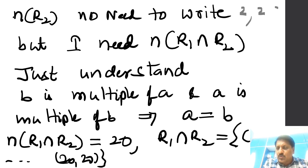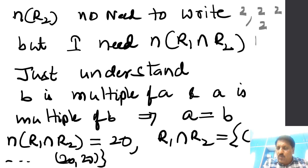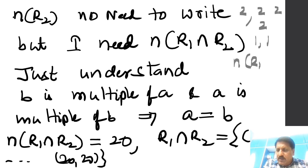Multiples of 9: 2 elements. Multiples of 10: 2 elements. After that, every number from 11 to 20 has only a single element — just (n, n) itself. So the total number of elements in R1 is 66.